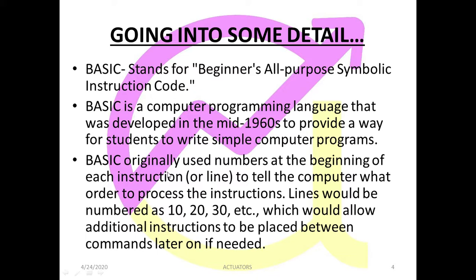BASIC originally used numbers at the beginning of each instruction or line to tell the computer what order to process the lines and instructions. Lines would be numbered as 10, 20, 30 and so on, which would allow additional instructions to be placed between the commands later on if needed.